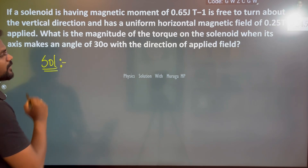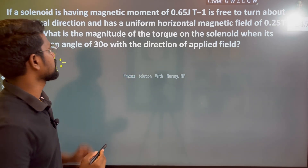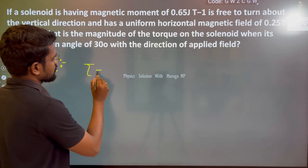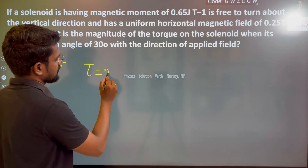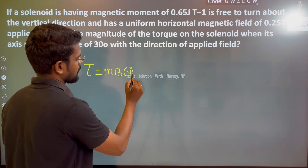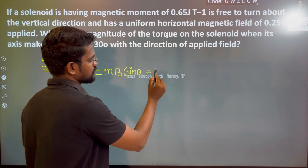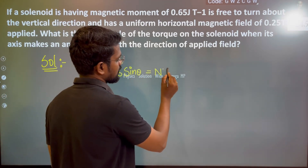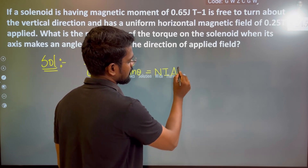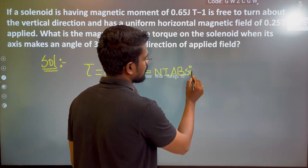So the torque — that is torque — is nothing but M·B·sinθ. You can also say N·I·A·B·sinθ. So if you know the number of turns, current, and area, that gives the magnetic moment, and multiplied by the magnetic field.